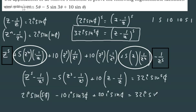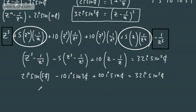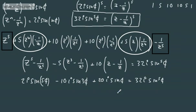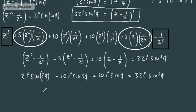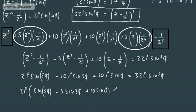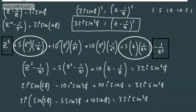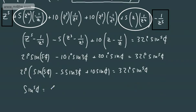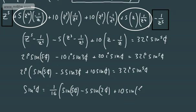So this equals 32i sine to the fifth theta. Now let's take the common factor of 2i out: 2i times the quantity sine 5 theta minus 5 sine 3 theta plus 10 sine theta, all equal to 32i sine to the fifth theta. Dividing both sides by 32i gives us exactly what we want: sine to the fifth theta equals one sixteenth times the quantity sine 5 theta minus 5 sine 3 theta plus 10 sine theta. And that is all done.